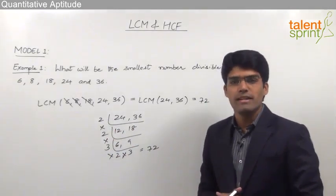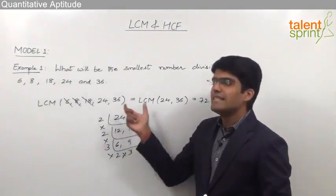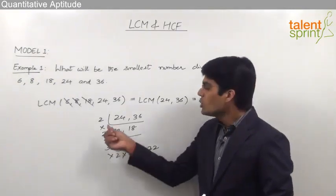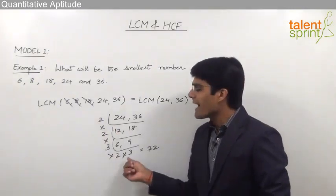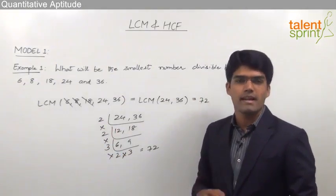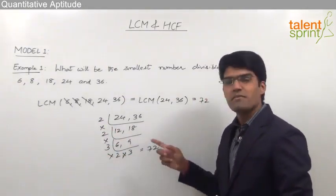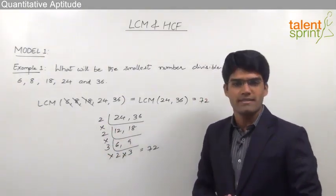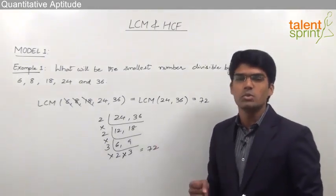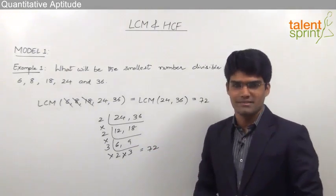One important point to note: whenever we find out the LCM for given numbers, it is always better to use prime factors instead of composite factors, so that we get the correct answer. Try to avoid composite factors on the left-hand side and always go for prime factors like 2, 3, 5, 7 and so on.